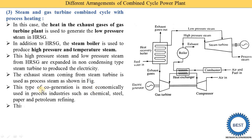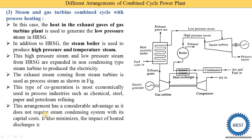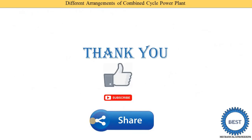This type of cogeneration is most economically used in process industries such as chemical, steel, paper, and petroleum refining. This arrangement has a considerable advantage as it does not require a steam condensing system, reducing capital cost. It also minimizes the impact of heated discharge to the environment, since the high temperature exhaust steam is not released to the atmosphere, thereby reducing global warming.